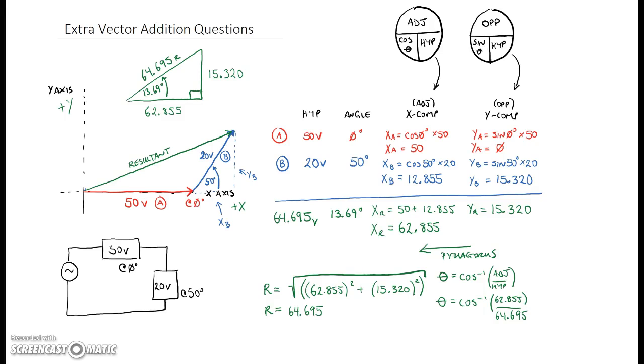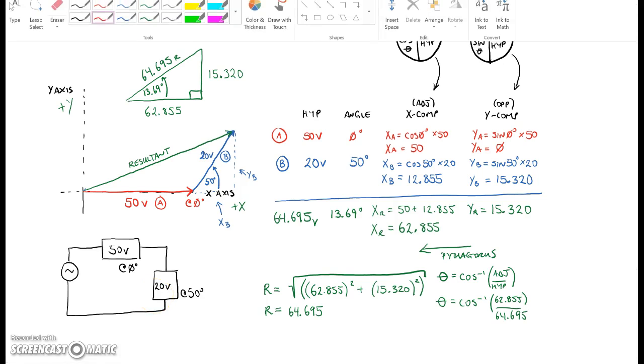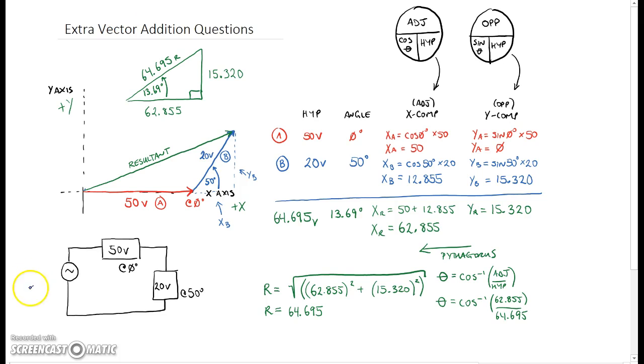All right guys, let's take a look at another extra vector addition question for the test that we have coming up here. This one has 50 volts that's happening at zero degrees and it has 20 volts that's starting at 50 degrees. So the example here is that you know maybe we have a series circuit where we have 50 volts dropped across the first load and 20 volts dropped across the second load, but they don't happen at the same time. This 50 volts is being dropped at zero degrees, so it's a resistive load, but this 20 volts, it starts its sine wave at 50 degrees, so those two voltages don't happen at the same time.